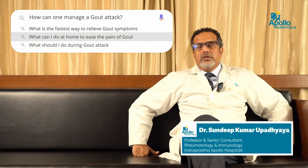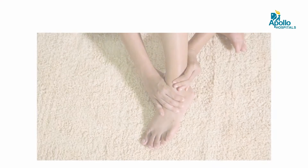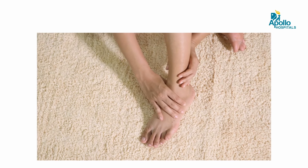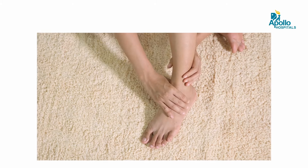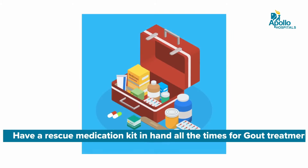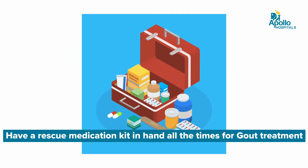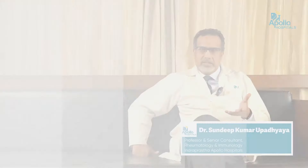How can one manage a gout attack? The management of an acute gout attack is based on the premise that pain and swelling happen so dramatically and severely that the patient should always have a rescue medication close at hand — in the closet, or in the travel bag if traveling. That rescue medication is usually an anti-inflammatory drug along with an acidity agent.